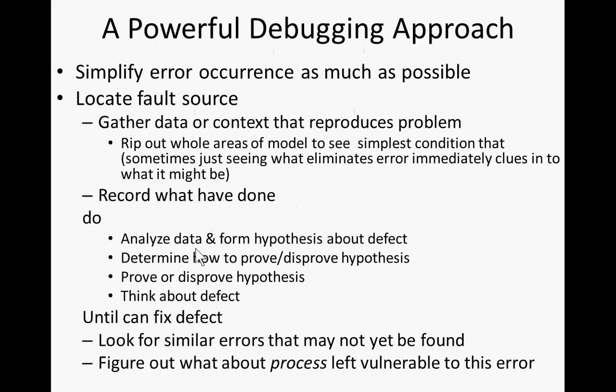The basic debugging approach frequently used within software development, which you can use within modeling, is: when you see a problem, try to simplify the occurrence as much as possible. Then you need to locate the fault source — a multi-step procedure. You gather data or understanding of the context that reproduces the problem, and this may involve ripping out whole areas of the model to see the simplest conditions that reproduce it.